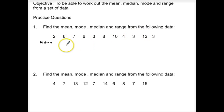If I add the total of these numbers, I'm going to get 64. So total is 64. And then I need to count up how many numbers there are. There's actually 11 numbers in my list there. So I'm going to divide this by 11.